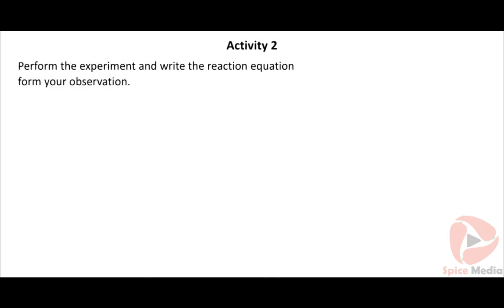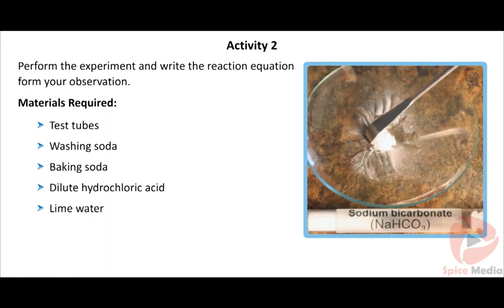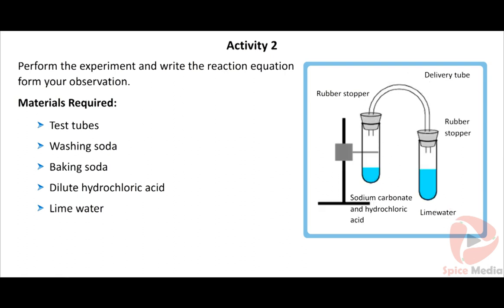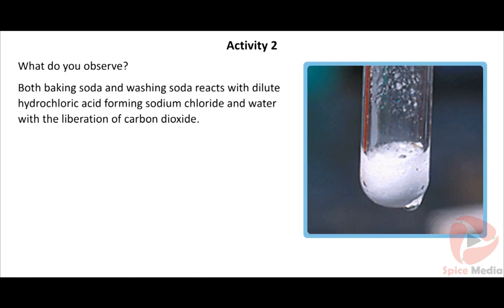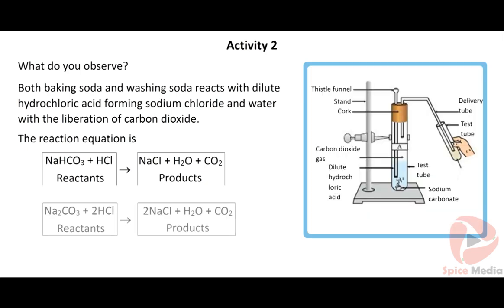Activity 2 (Acids): Perform the experiment and write the reaction equation from your observation. Materials required: test tubes, washing soda, baking soda, dilute hydrochloric acid, and lime water. Take 2 test tubes labelled 1 and 2. Add washing soda to test tube 1 and baking soda to test tube 2. Add dilute hydrochloric acid to both. Both react with dilute HCl forming sodium chloride and water with liberation of carbon dioxide. The carbon dioxide turns lime water milky. Reactions: Na₂CO₃ + 2HCl → 2NaCl + H₂O + CO₂; NaHCO₃ + HCl → NaCl + H₂O + CO₂.